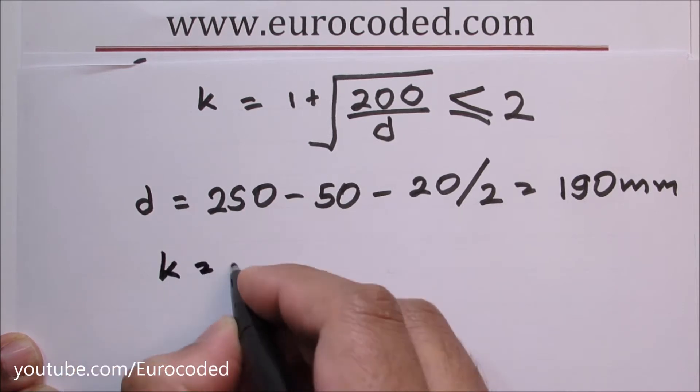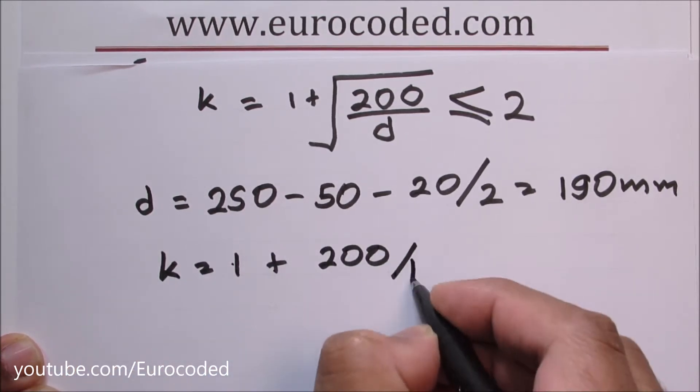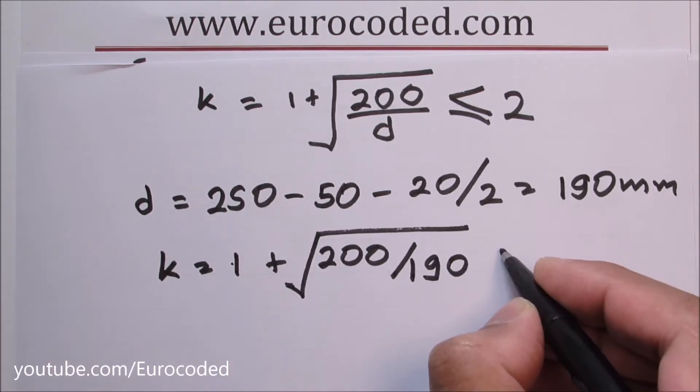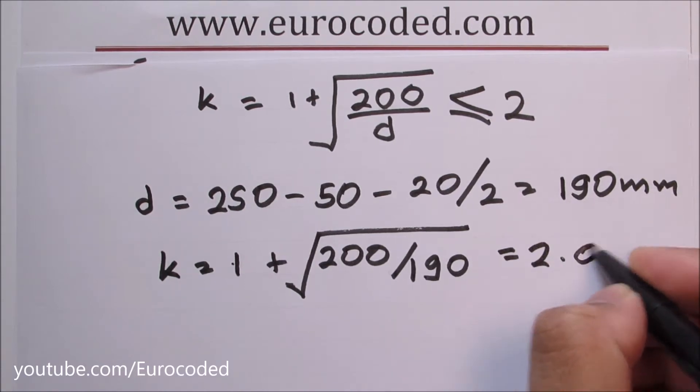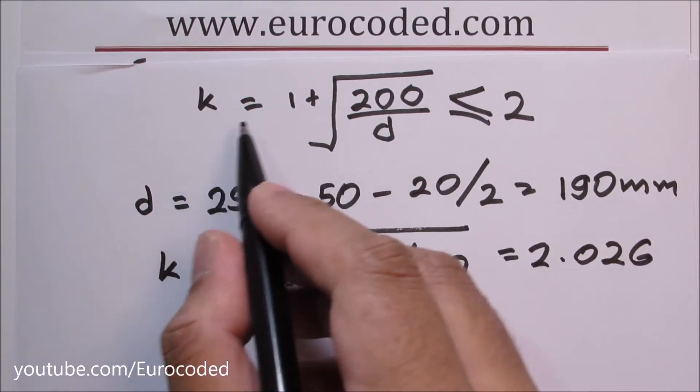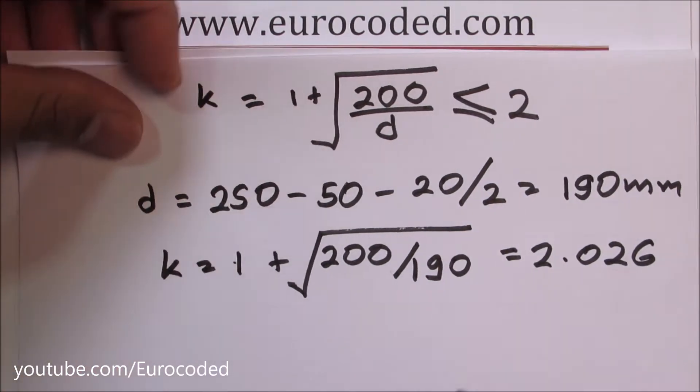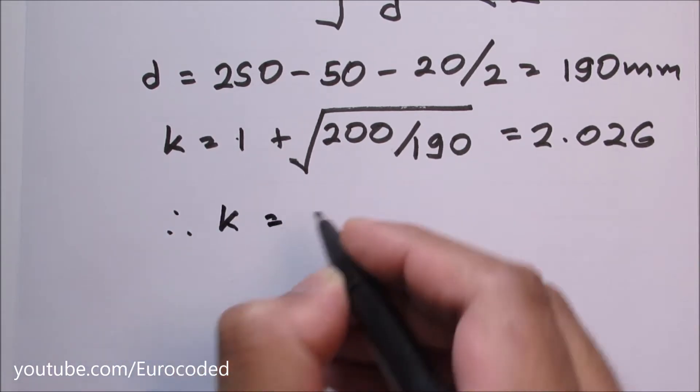Then we can write k is equal to 1 plus the square root of 200 over 190. This comes to 2.026. However this k value cannot be bigger than 2. Hence we can write k is equal to 2.